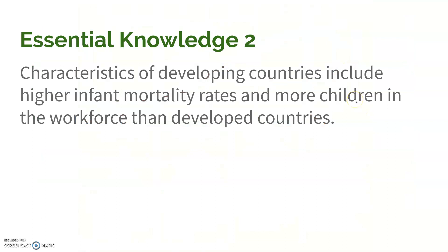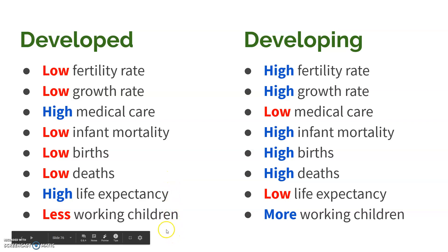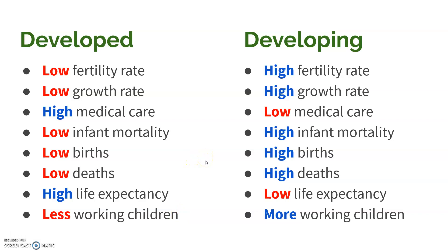The last thing to talk about are characteristics of developing versus developed countries. There are differences in infant mortality rates and children in the workforce. There's also a difference in fertility rate — it's much lower in developed countries — along with a lower growth rate. There's more medicine in developed countries. Births have gone down, deaths have gone down, people live longer, and children are expected to work less because they need to be focused on getting an education.